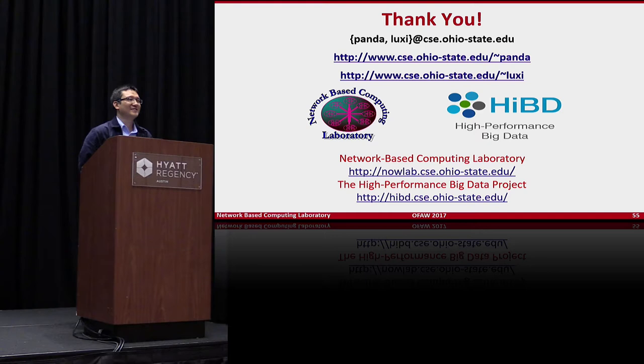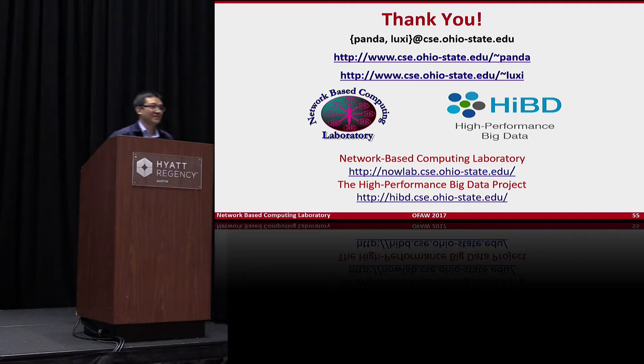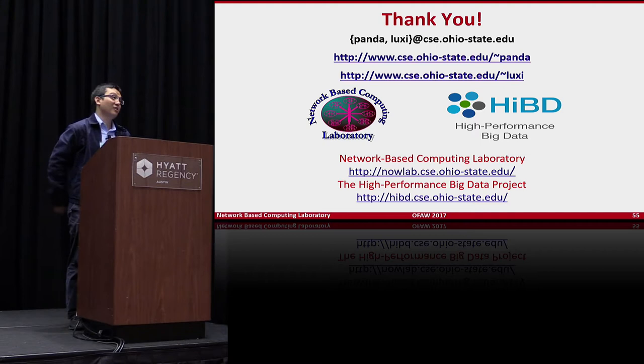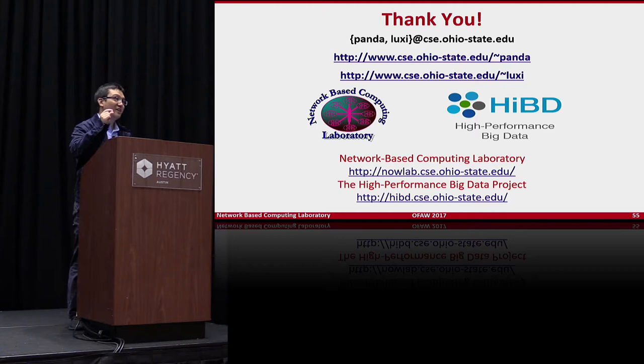Q: How large were the virtual machines you were migrating? A: The breakdown numbers shown are for 512 MB VMs. We also tested 1 GB, 2 GB, and 4 GB — of course migration time increases with more memory, but because we leverage RDMA for the memory copy, it's much better than using TCP/IP or IP over IB.